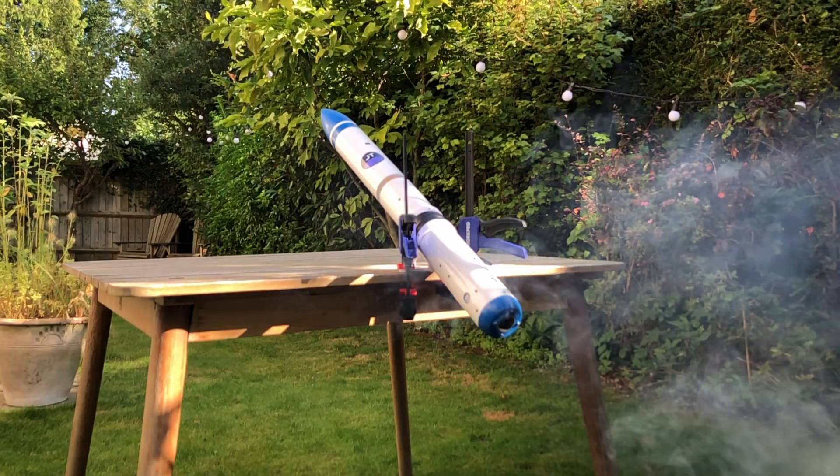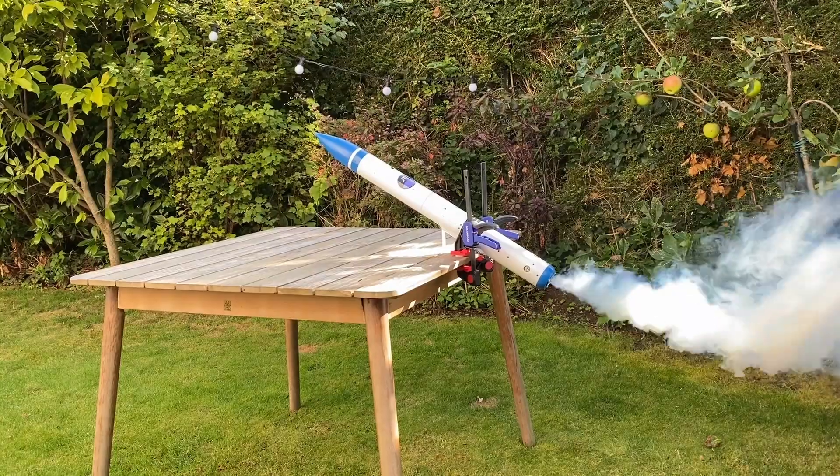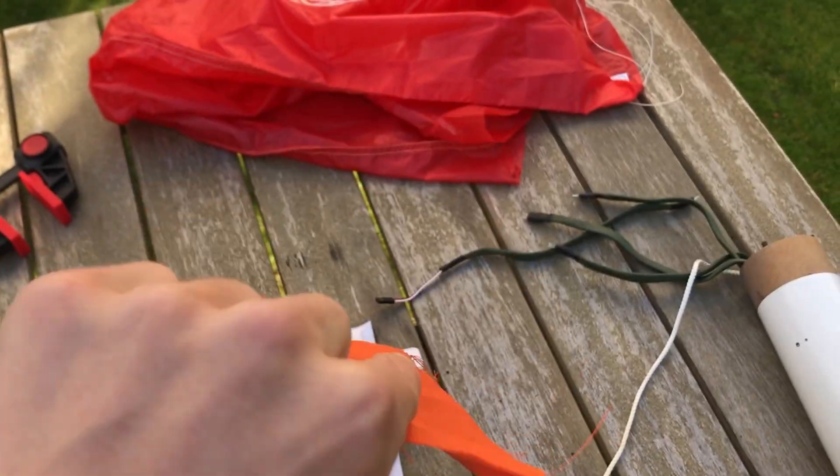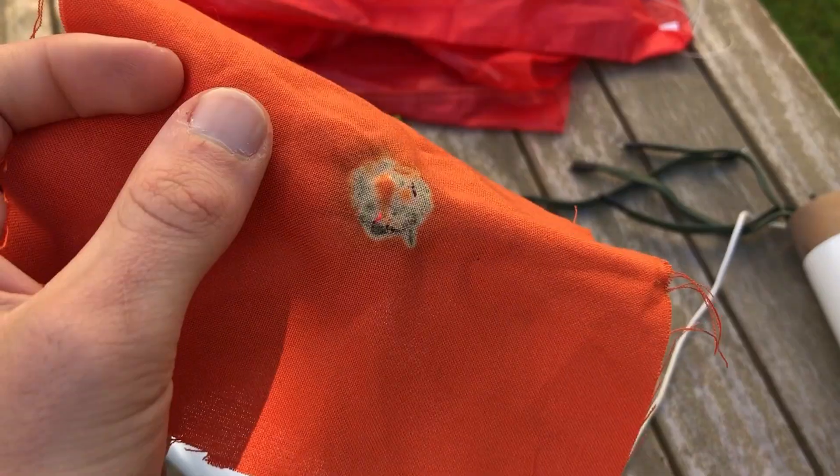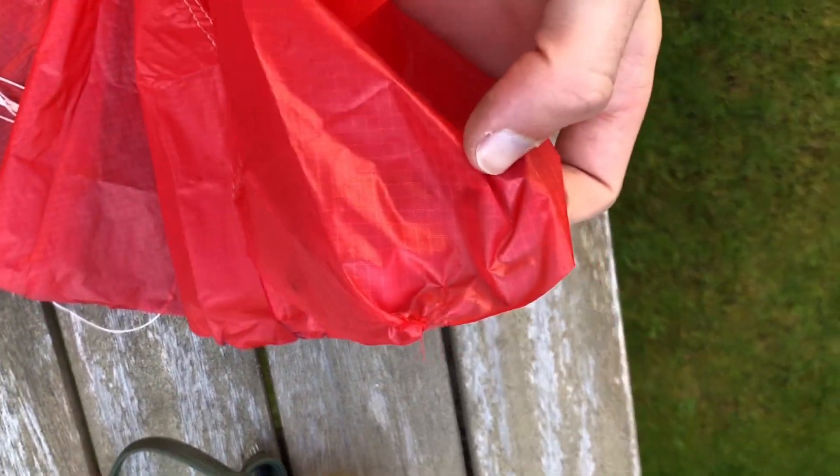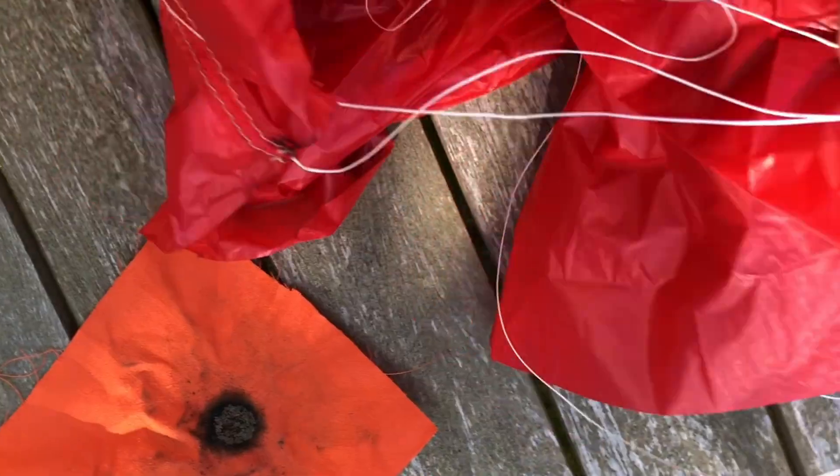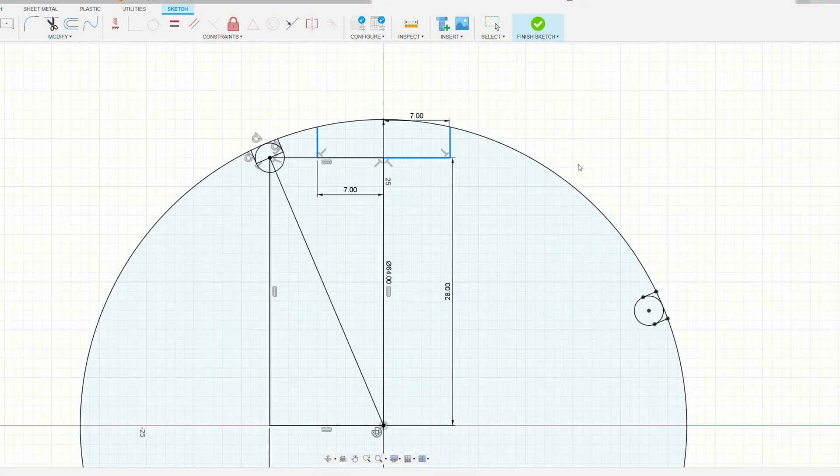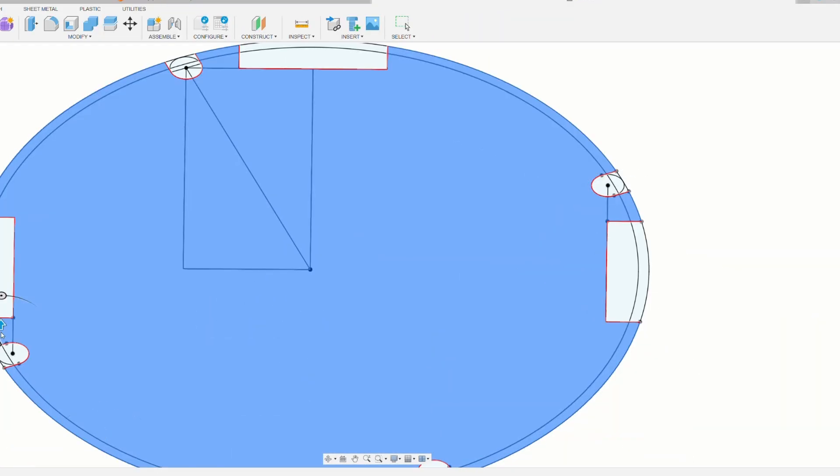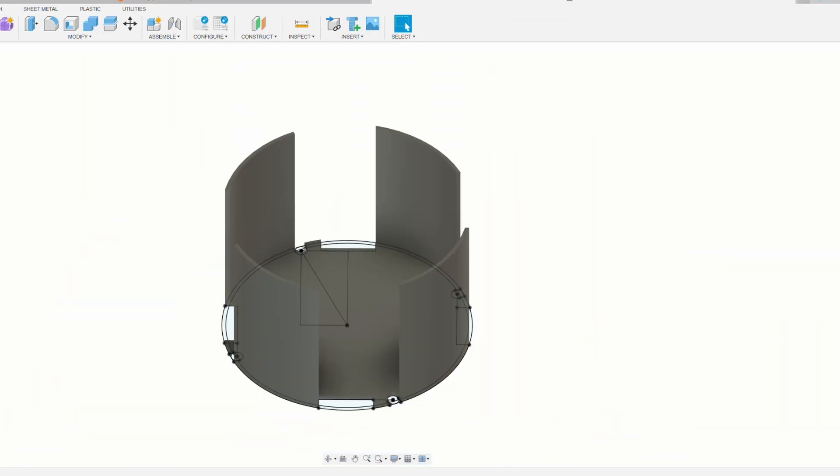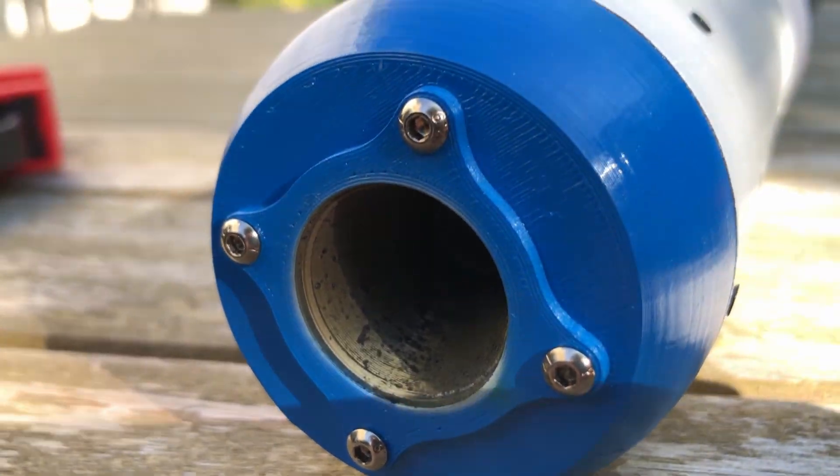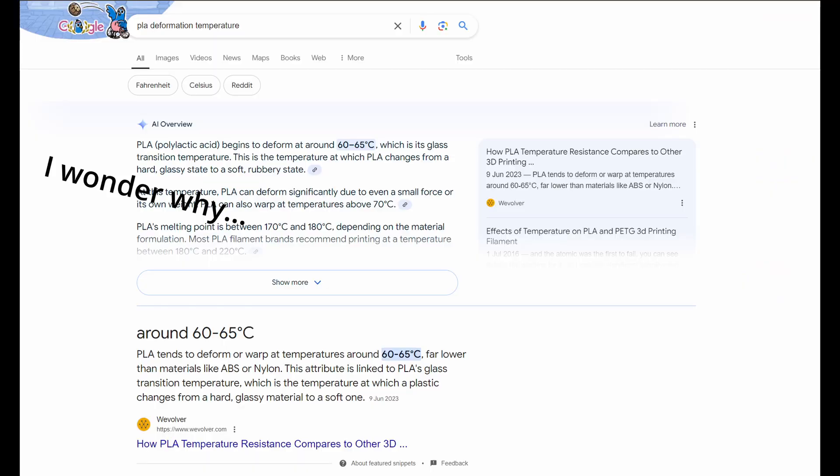So that didn't exactly work. The ejection charge wasn't strong enough to overcome the friction involved. When I opened up the rocket, I also noticed that the fireproof blanket shrouding the parachute burned through, fusing the chute and rendering it useless. I think I'm going to ditch the blanket and design a lightweight cup/piston that houses the parachute. This should also reduce the friction and provide a more rigid path for the ejection force to pass through. I also noticed that the 3D printed motor retainer was looking a bit worse for wear, so I'll be looking into that as well.